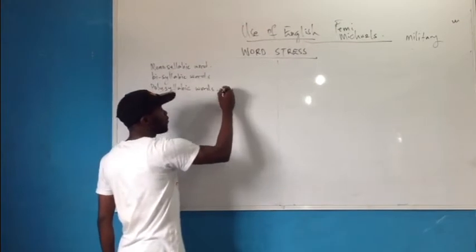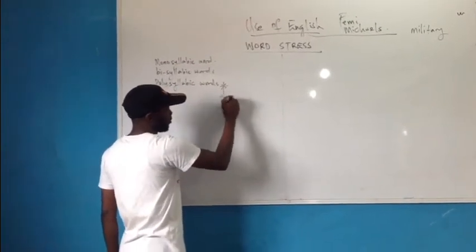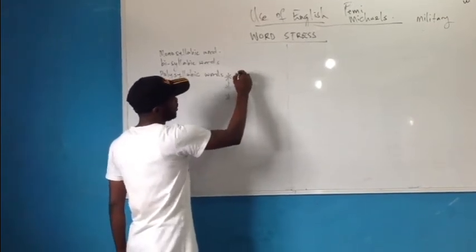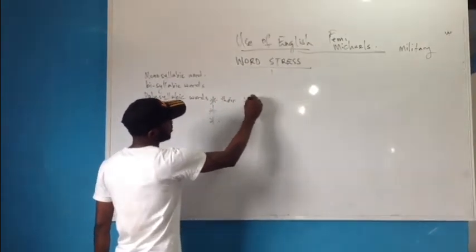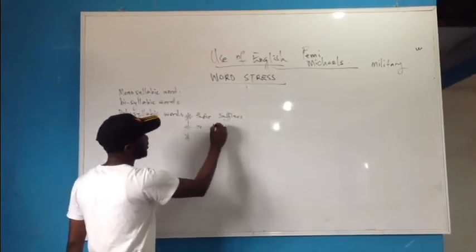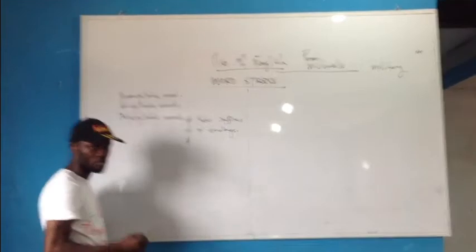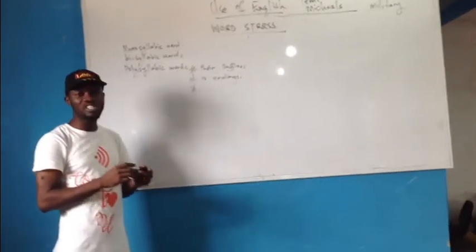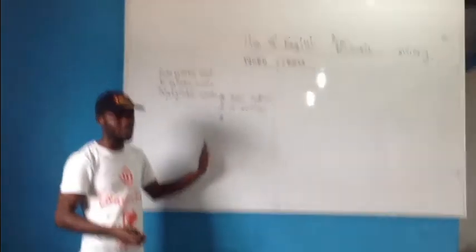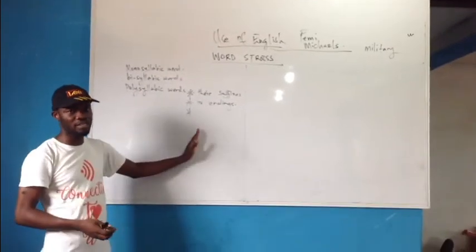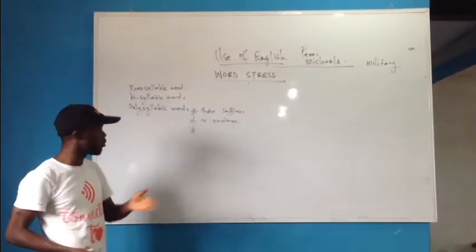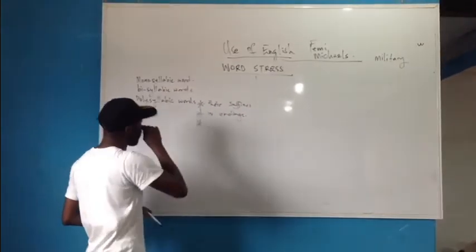These categories also have sub-categories, and basically some of them are treated based on their suffixes — their endings. So I'll get to a point where I tell you: when you have a word that ends like this, or has this number of syllables, or is an adjective with this number of syllables — all those details will show you which category the word belongs to. We'll pick them one after the other.